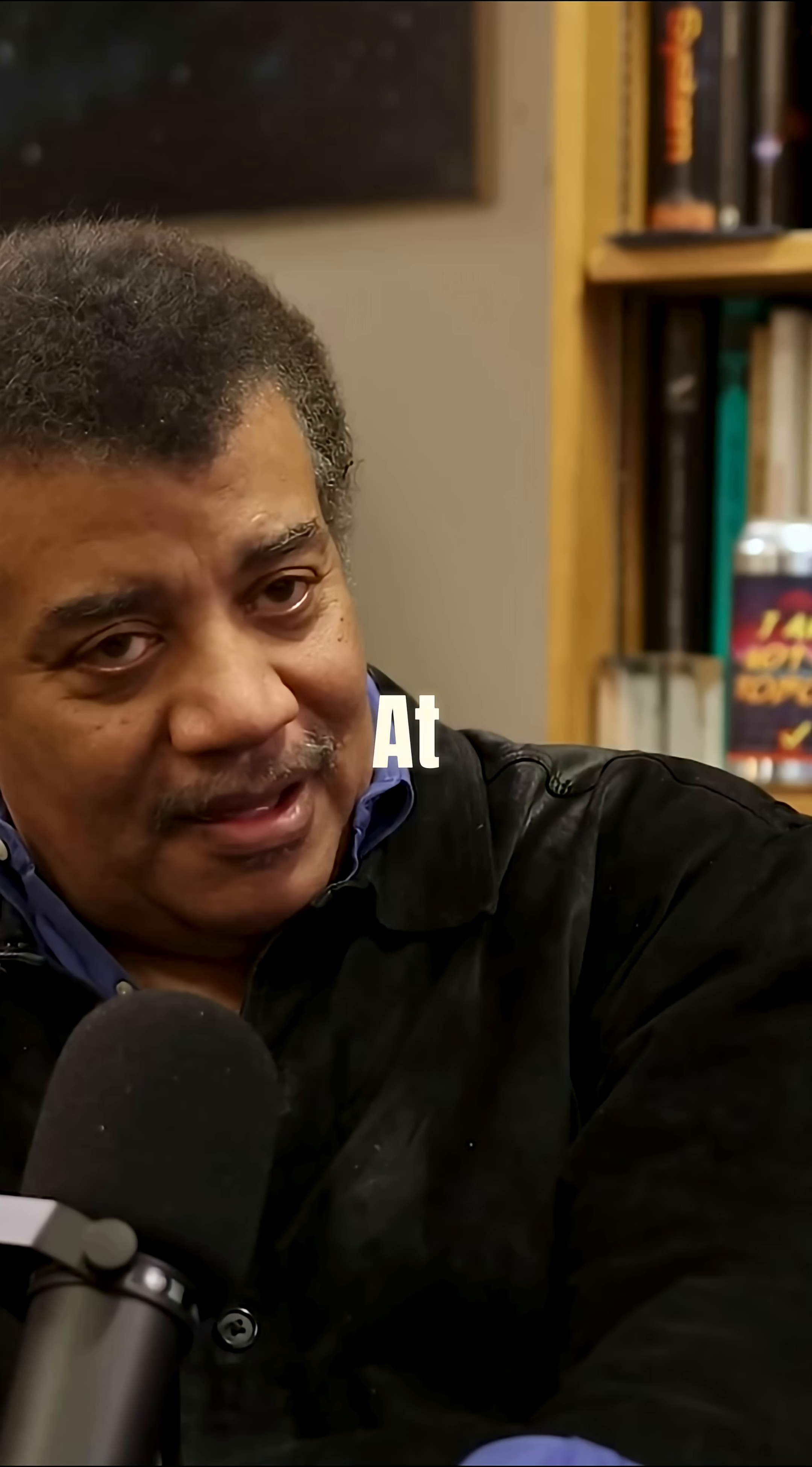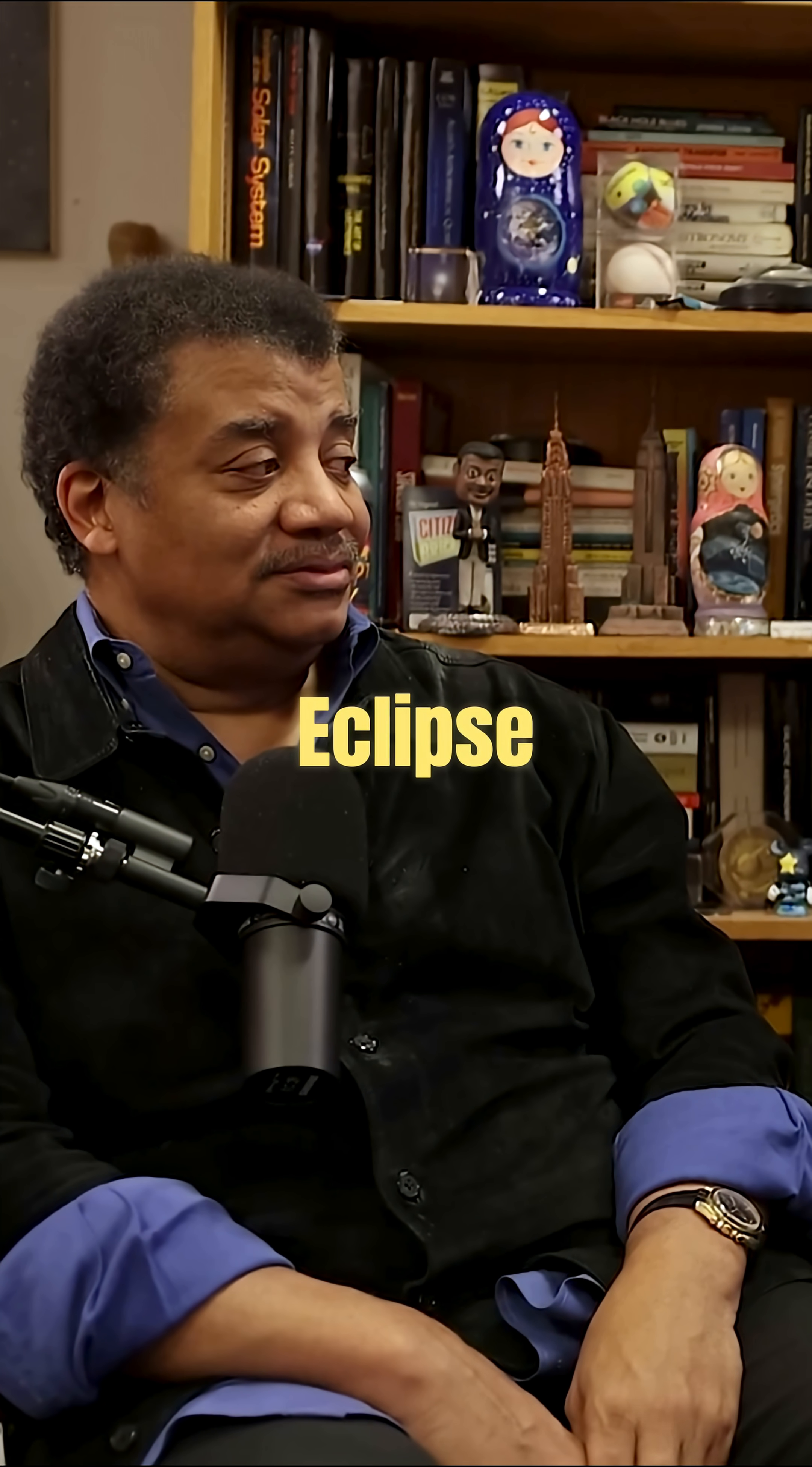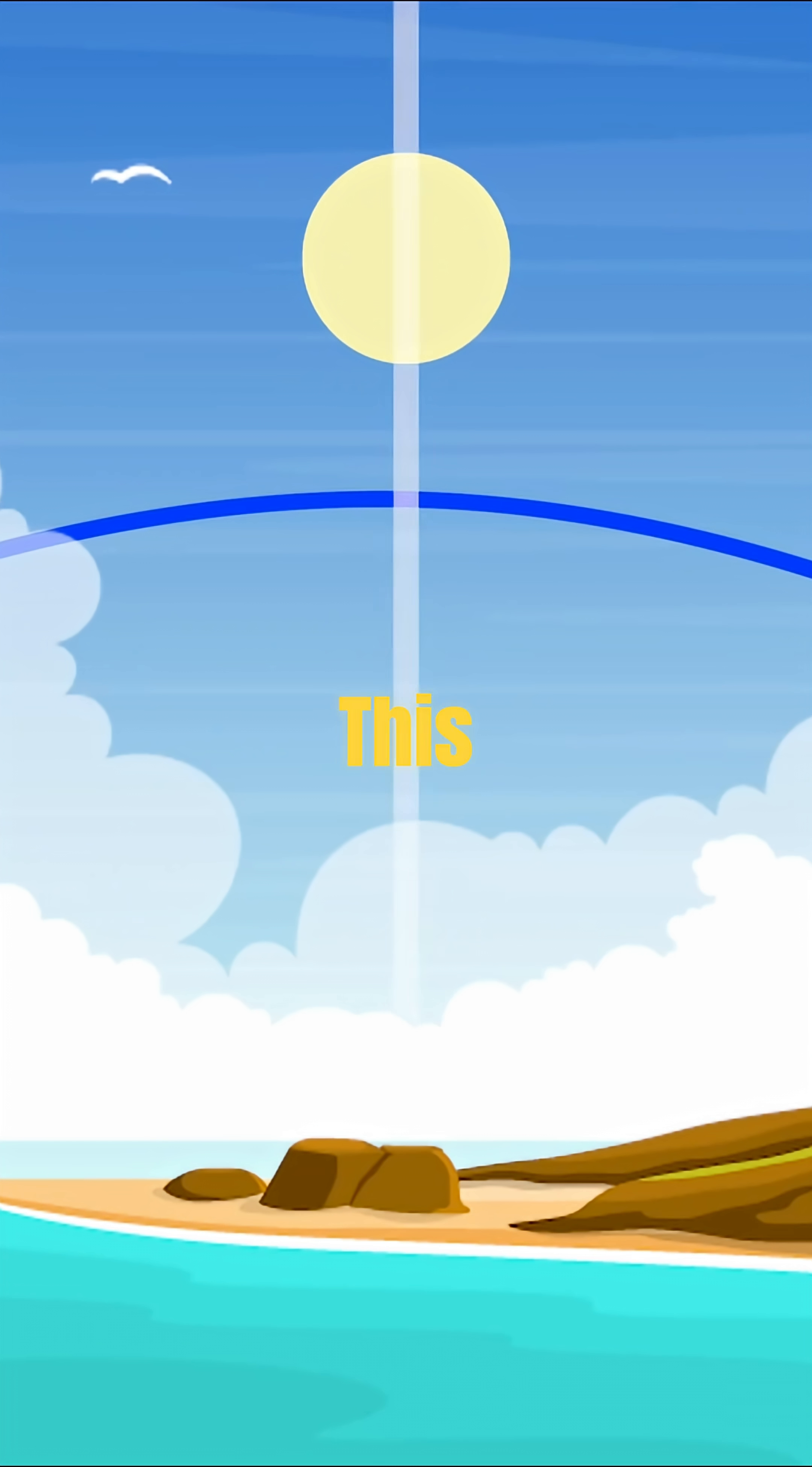So if the moon is crossing the path of the sun, at the same time the sun is in that spot, you get what? An eclipse. Right. So this path the sun takes around the Earth is called the ecliptic because that's where you would get an eclipse.